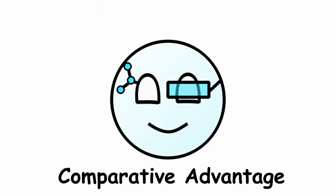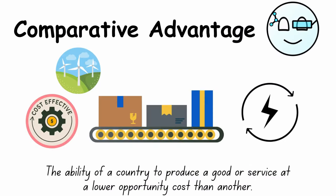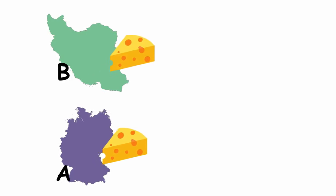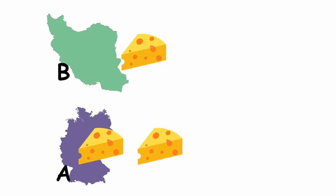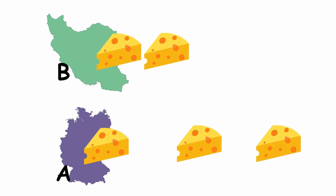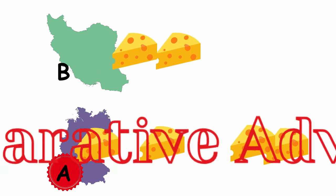Comparative Advantage is the ability of a country to produce a good or service at a lower opportunity cost than another — in other words, being more cost effective. For example, if country A was able to produce cheese at a faster rate, then country A would have the comparative advantage.